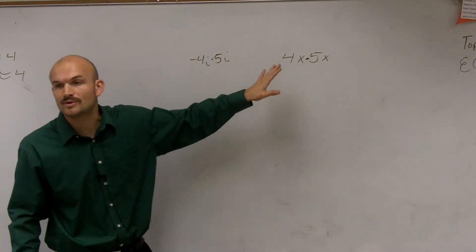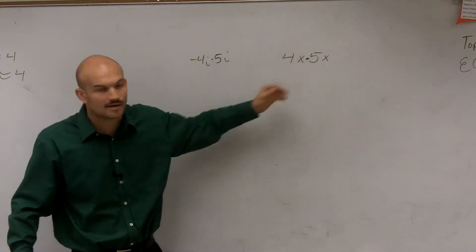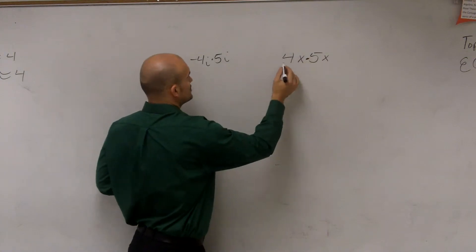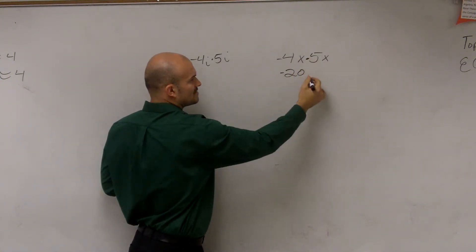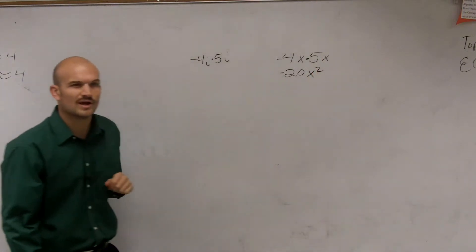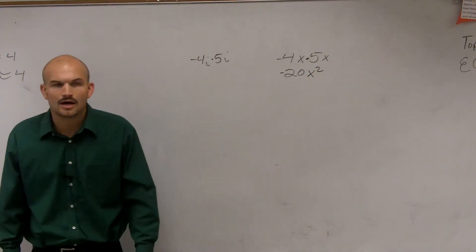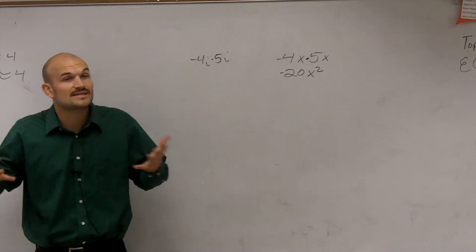And if you remember, when we were doing this, what we do is we make sure we multiply our coefficients. Let's do it like this. So you'd have negative 20, and then x times x we wrote as x squared, right? You guys remember multiplying variables and coefficients. It's going to be the same thing.